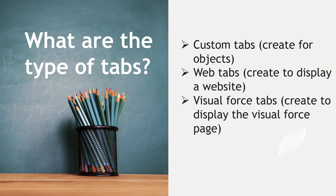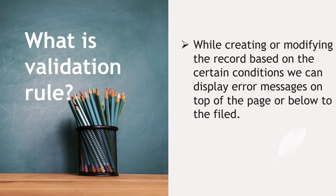What is a validation rule? In simple terms, a validation rule fires before saving a record. While creating or modifying a record, based on certain conditions, a validation rule can display an error message either at the top of the page or below a specific field.